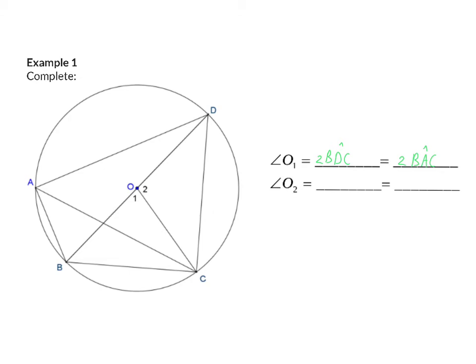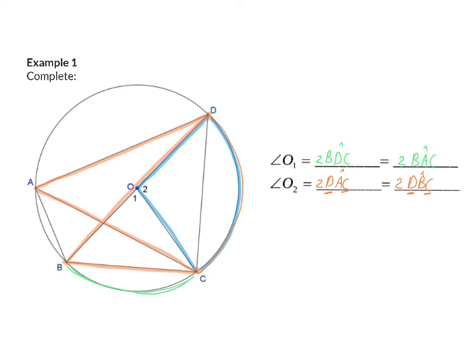For angle O2, it is formed from arc CD. From arc CD, I can get back together on the circumference by moving to angle A or to angle B. So angle O2 is twice angle DAC, and it is twice angle DBC. Notice that the arc CD appears in both angle DAC and angle DBC, just as arc BC appeared in both angle BDC and angle BAC.